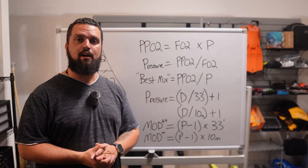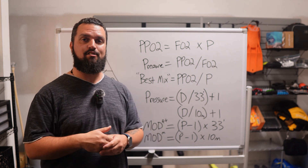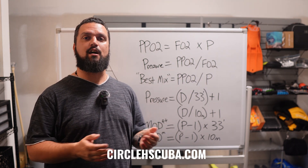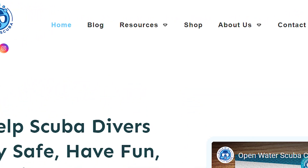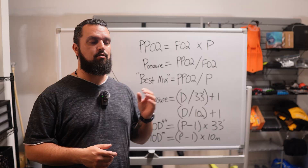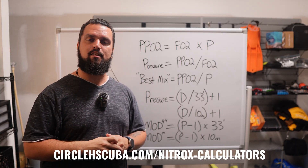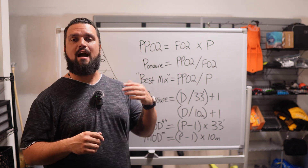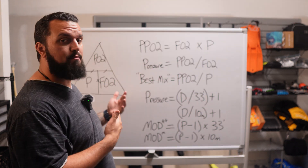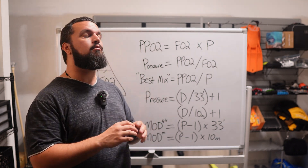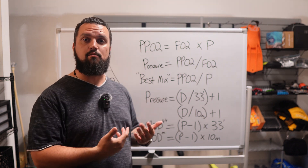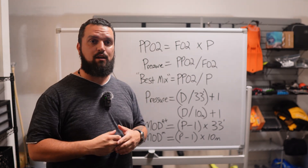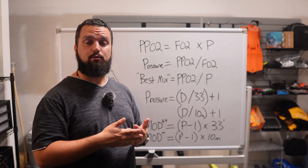I've also made this easy with a free online calculator at circle8scuba.com. Go to the Resources menu and look for the Nitrox Calculators option. Whether you're calculating your max operating depth, the partial pressure at depth, or the best mix for a dive site, it's all there. But remember: all the theory in the world is great, but you must analyze the actual tank you're breathing from — if you think you're breathing 32% but it's actually 36%, you could exceed your MOD and risk CNS oxygen toxicity.